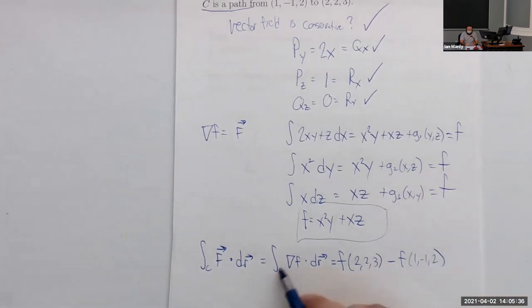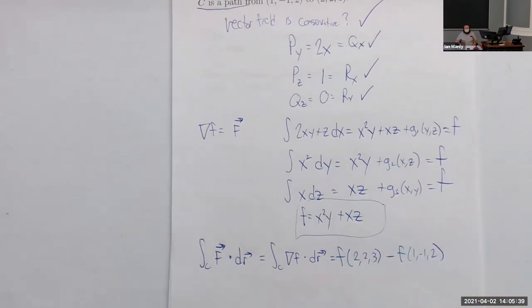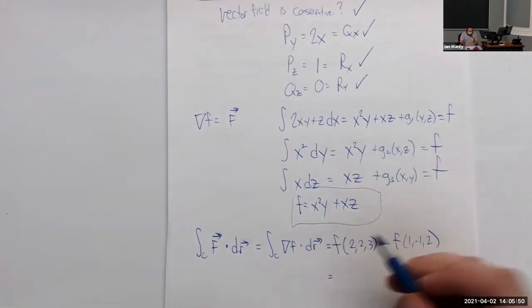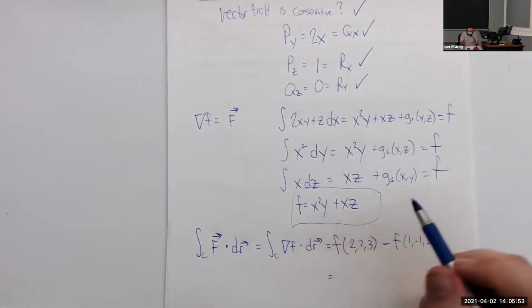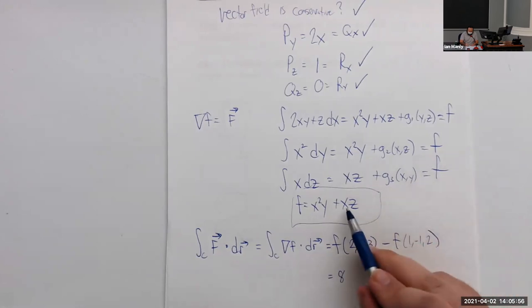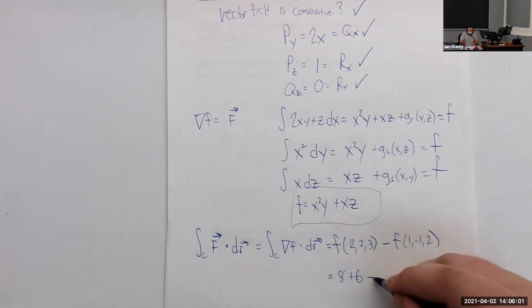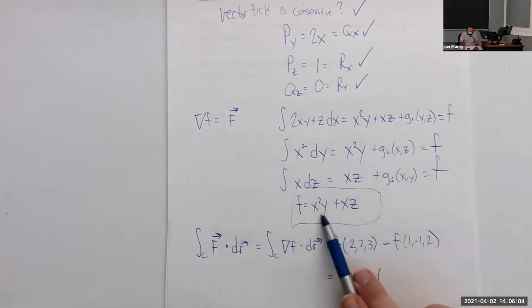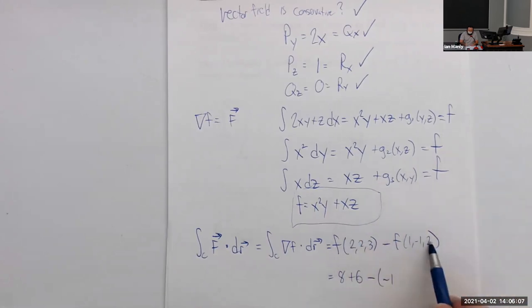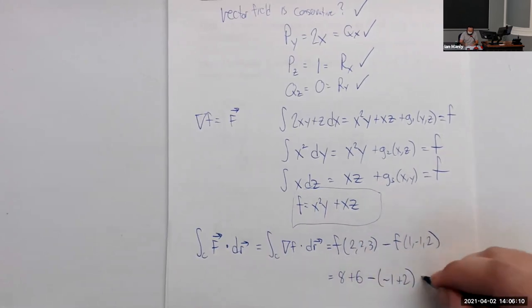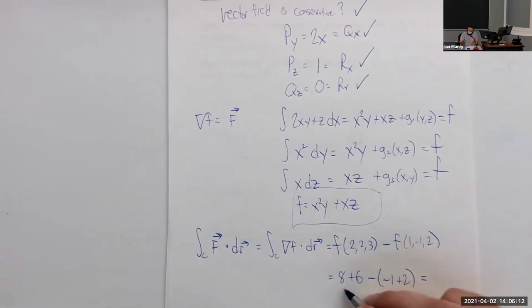This is how we get around not having a parameterization of c — it turns out the parameterization doesn't matter at all, only the endpoints. Plugging in (2, 2, 3): x²y = 8 and xz = 6, giving 14. Plugging in (1, −1, 2): x²y = −1 and xz = 2, giving 1. So 14 minus 1 gives us 13.